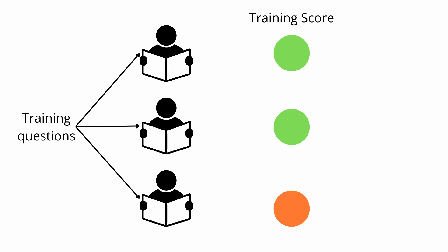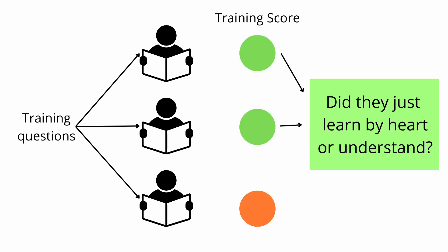But what do those green bubbles tell you? A green bubble could either mean that the student just learned those specific questions by heart or ideally it would mean that your student understood the material and can apply it in the competition to new questions. By only using the training data to quiz them you will not be able to distinguish between those two cases.